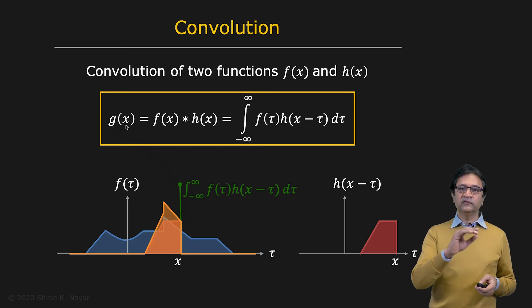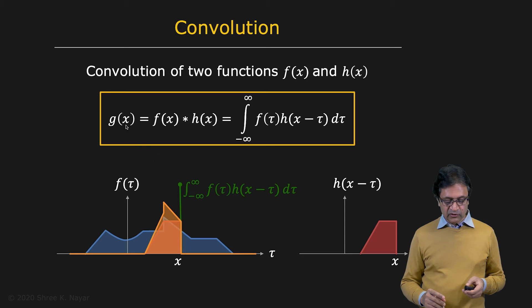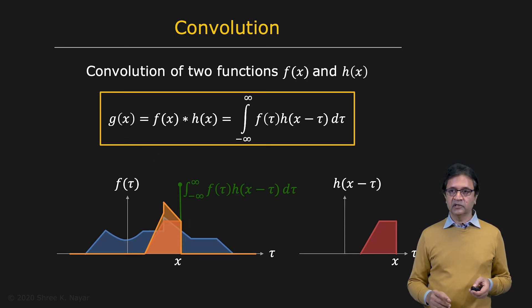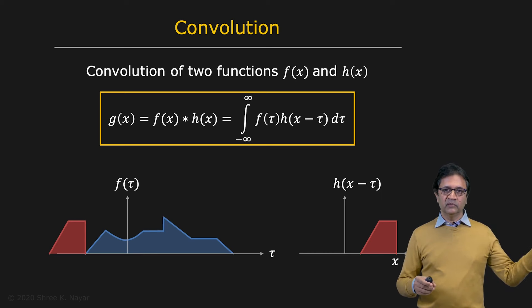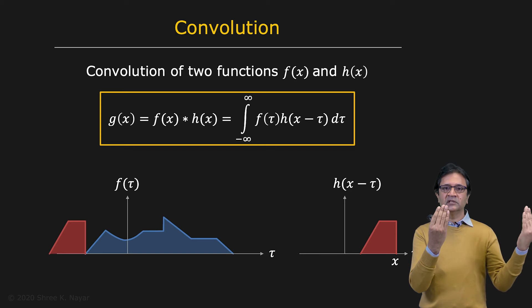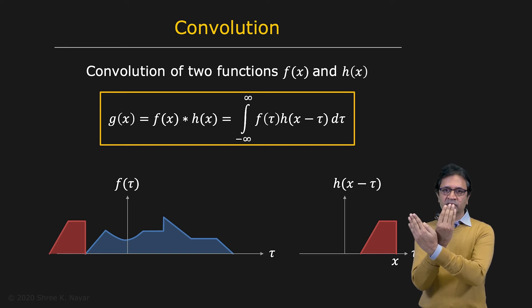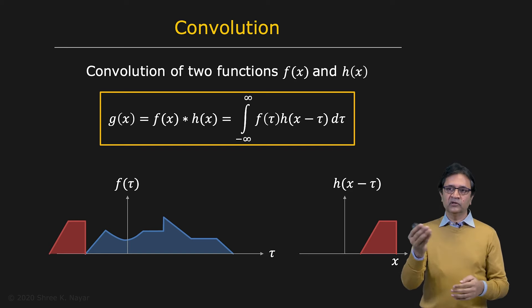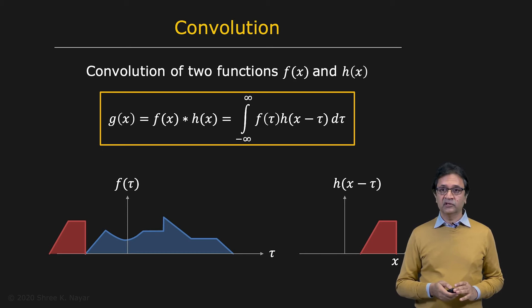So if you wanted to find all of g, the entire function g of x, what you essentially do is take the function h, and after you flip it, you move it to minus infinity. This is f sitting here, this is h. And now you're going to slide h from left to right and pass it through f, and at each point you're going to do what we just did to get the function g of x.